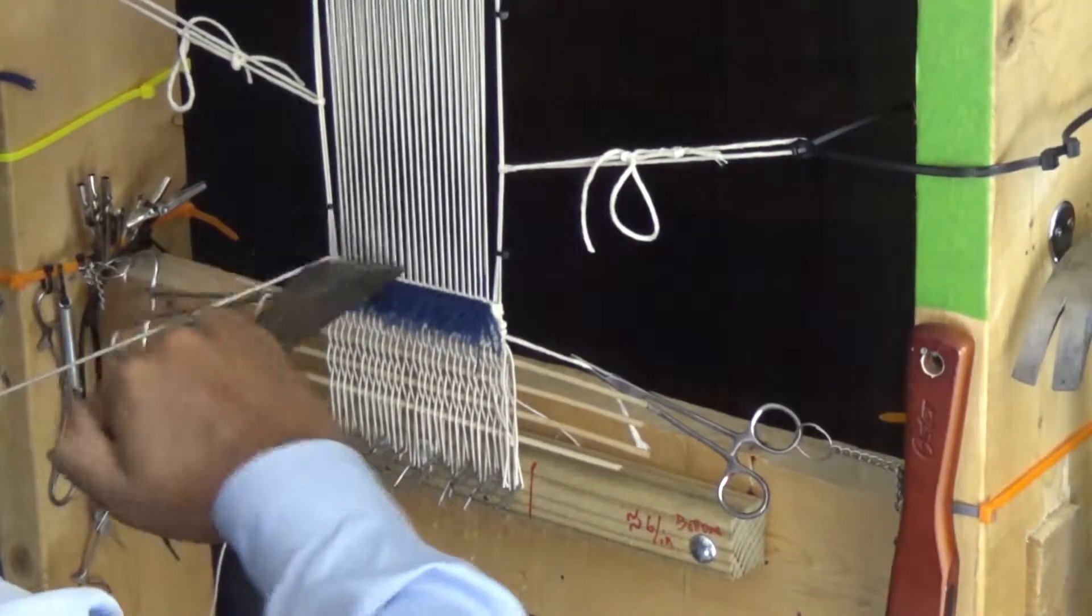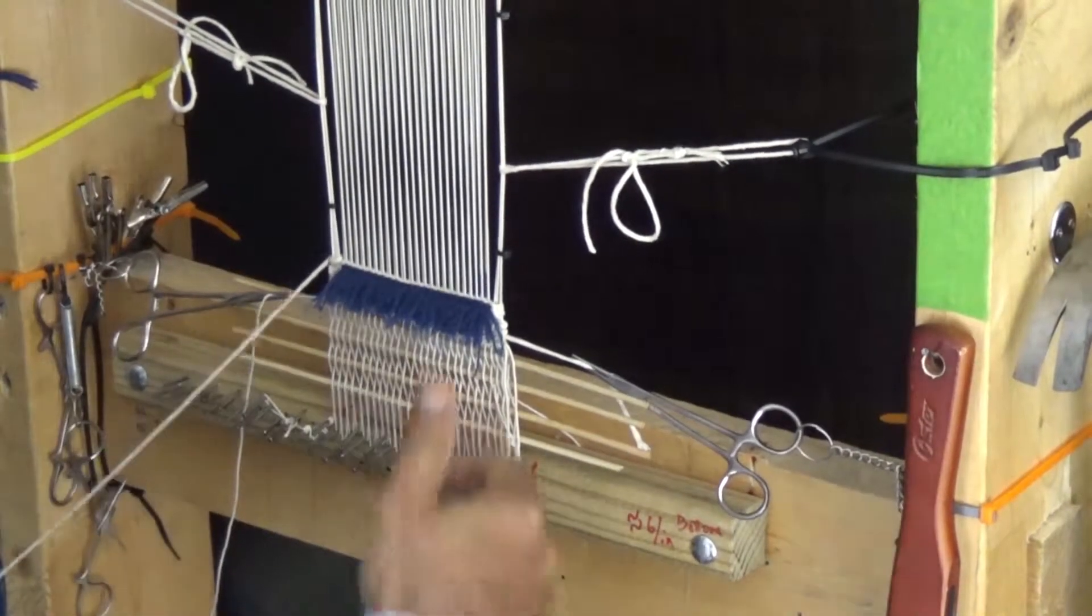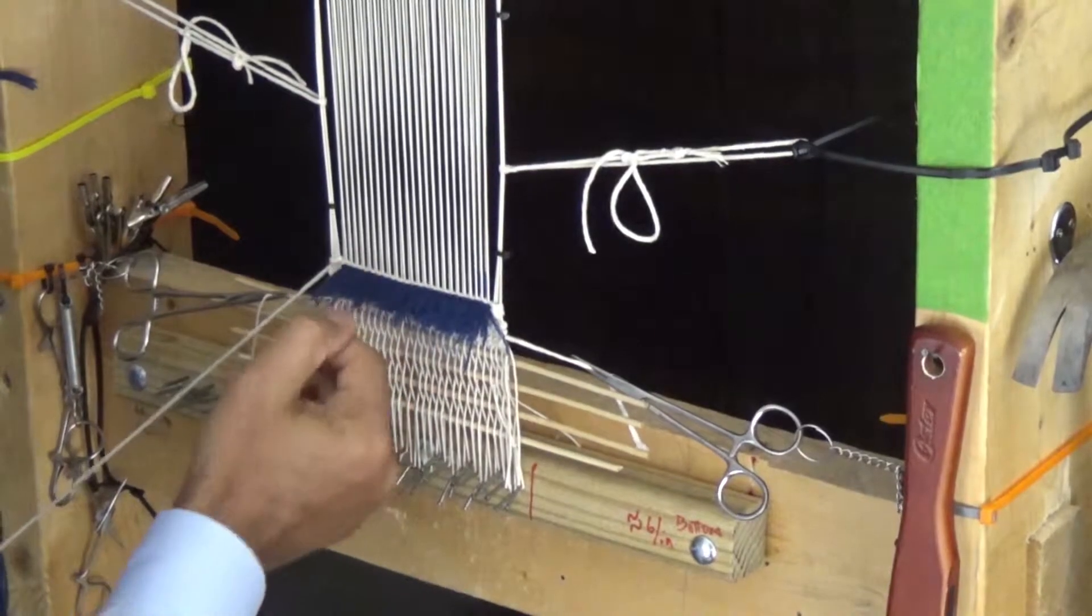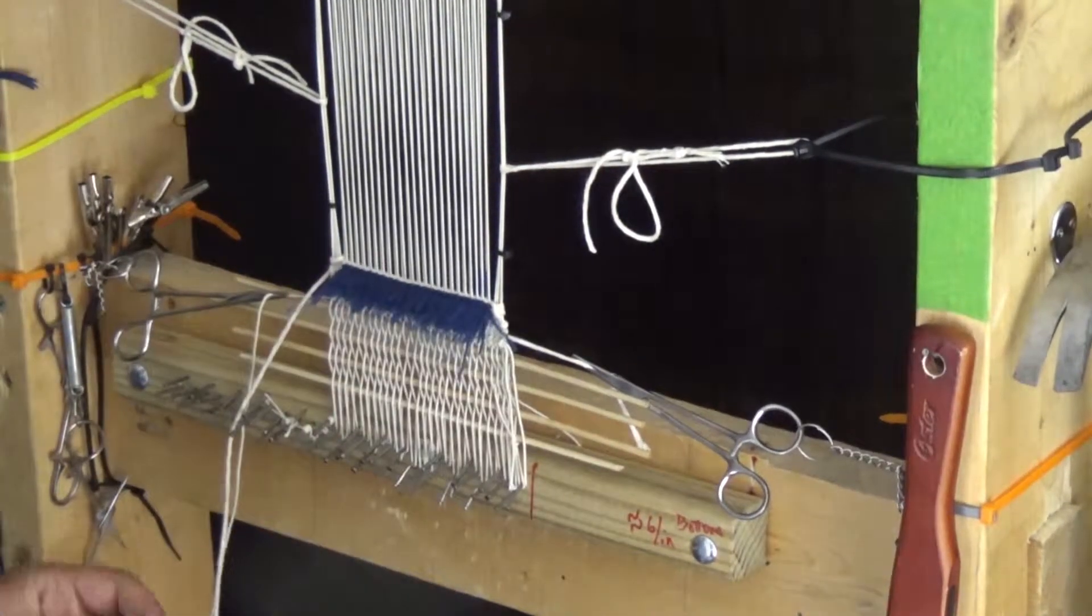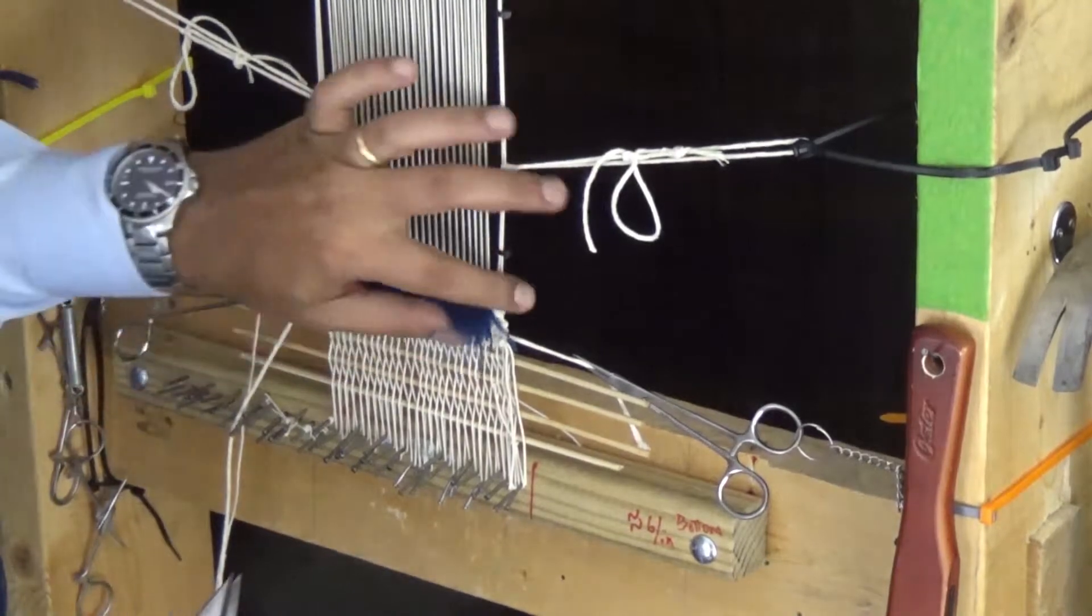Remember I used four warps on each side for the salvage. This rug will only have one weft for each row of knots. Some rugs may have two, three or more wefts for each row.